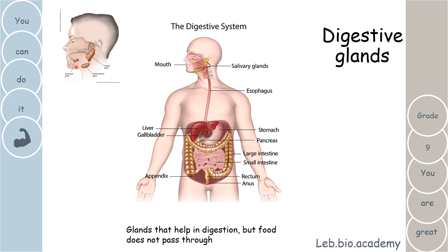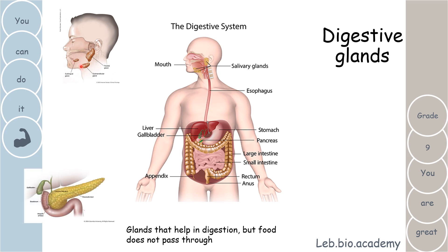The first glands are called the salivary glands. These are the salivary glands — they secrete saliva that will help in the digestion of food, but the food will not pass through the salivary glands.